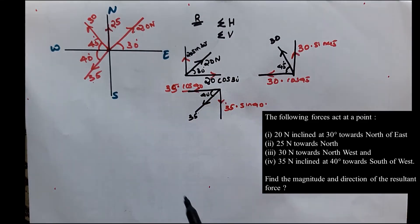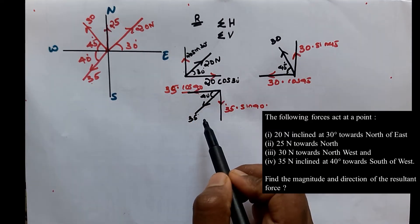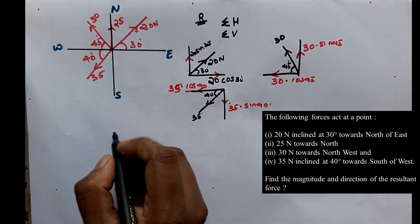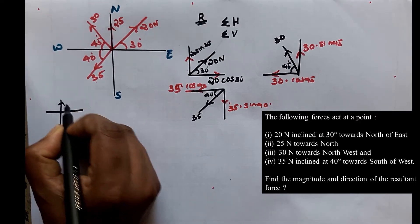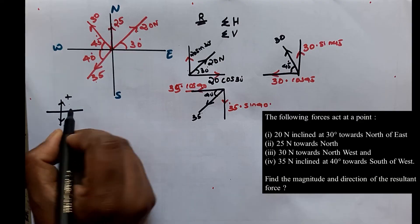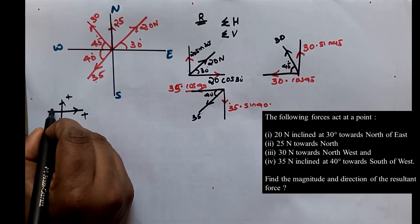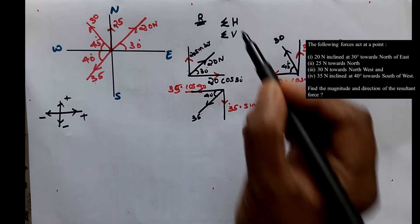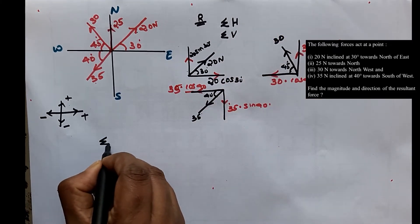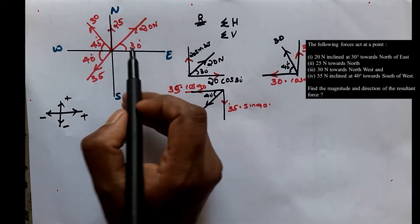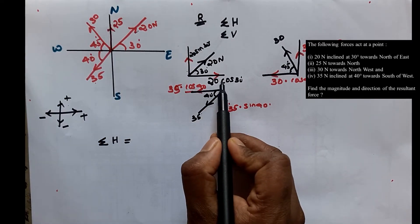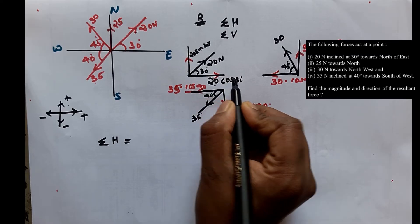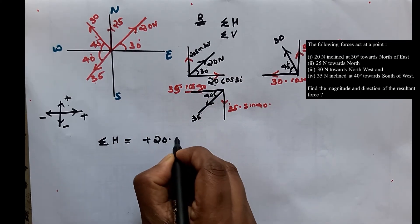We will resolve the forces. We have sign convention: the force upwards is positive, the force downwards is negative, the force to the right is positive, the force to the left is negative. First step is sigma H — the sum of horizontal forces. The 20 N force has a horizontal component: 20 cos 30, in the right direction, so positive — plus 20 cos 30.